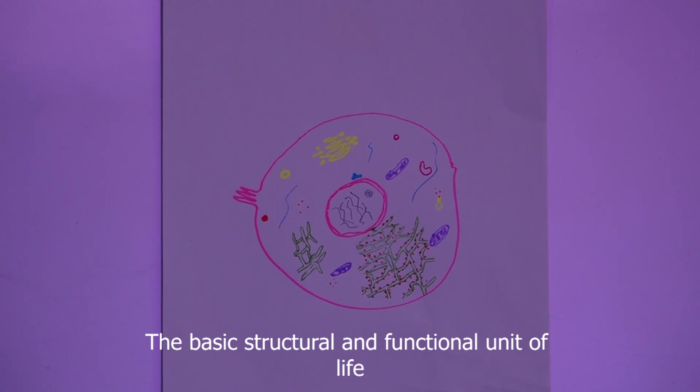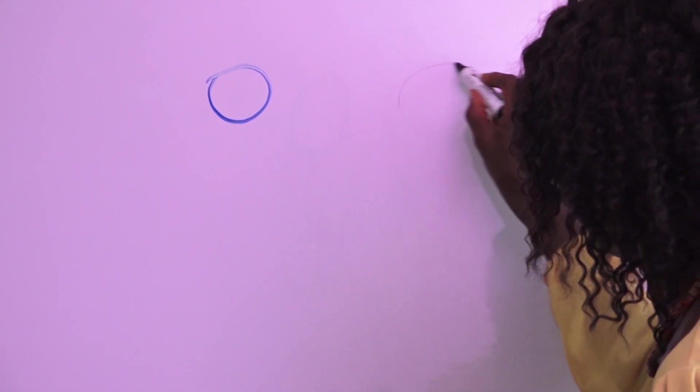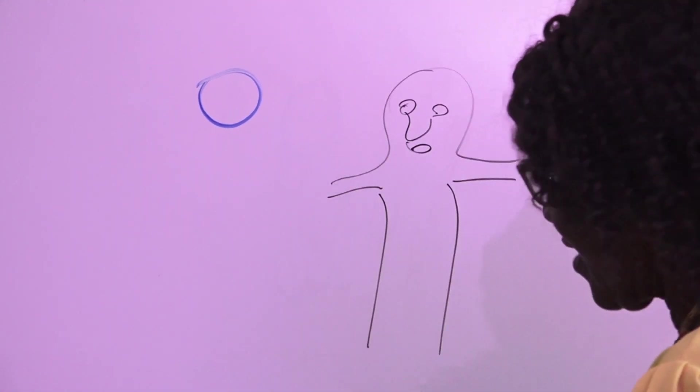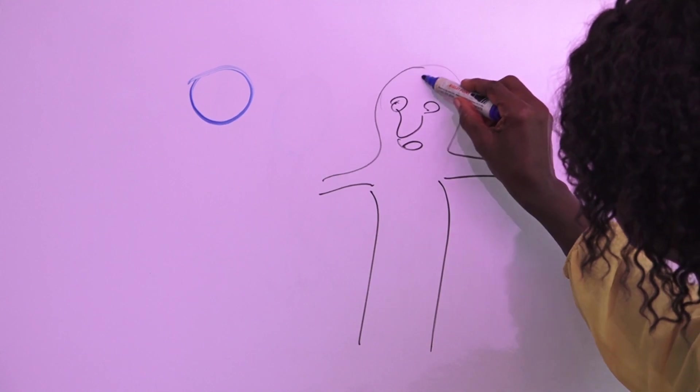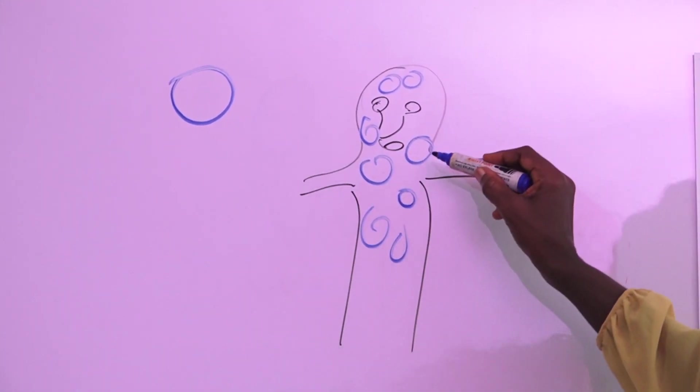Meaning, if this is a cell and this is a living thing, every part of this living thing is made up of cells, structural units.